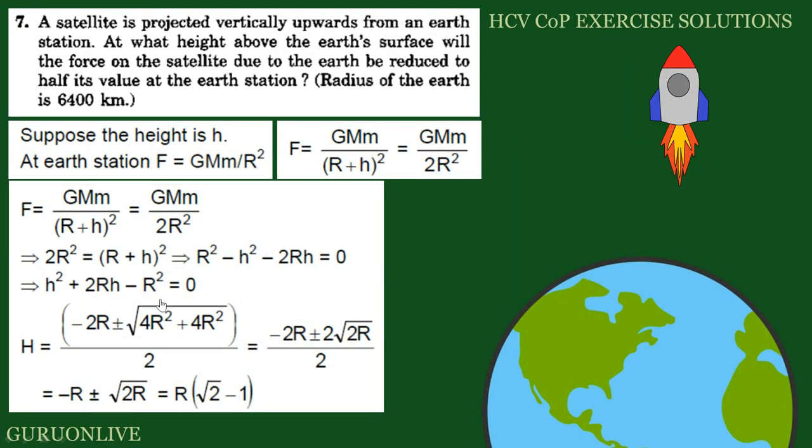For R and H we have a quadratic equation. R is constant, so we get a quadratic expression x square plus bx plus c equals 0. The roots are minus b plus or minus root b square minus 4ac by 2a.